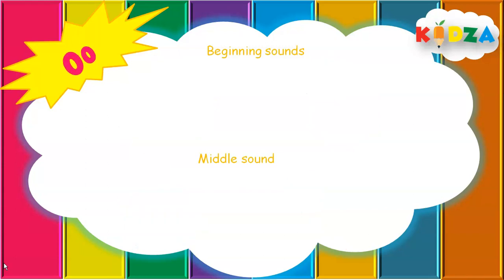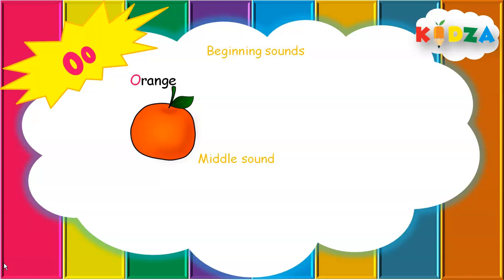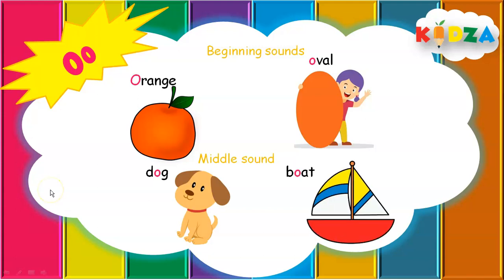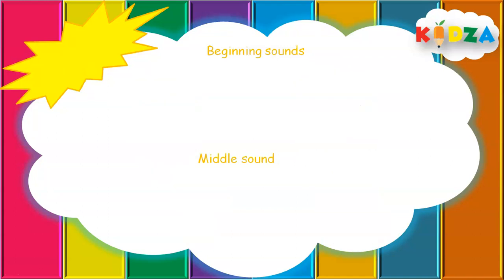Letter O. The short sound of O is 'o' and the long sound of O is 'O' — the letter's name itself. Beginning sounds: O as in Orange — O-R-A-N-G-E, Orange. Long sound O — Oval. Middle sounds: O as in Dog — D-O-G, Dog. O as in Boat — B-O-A-T, Boat.